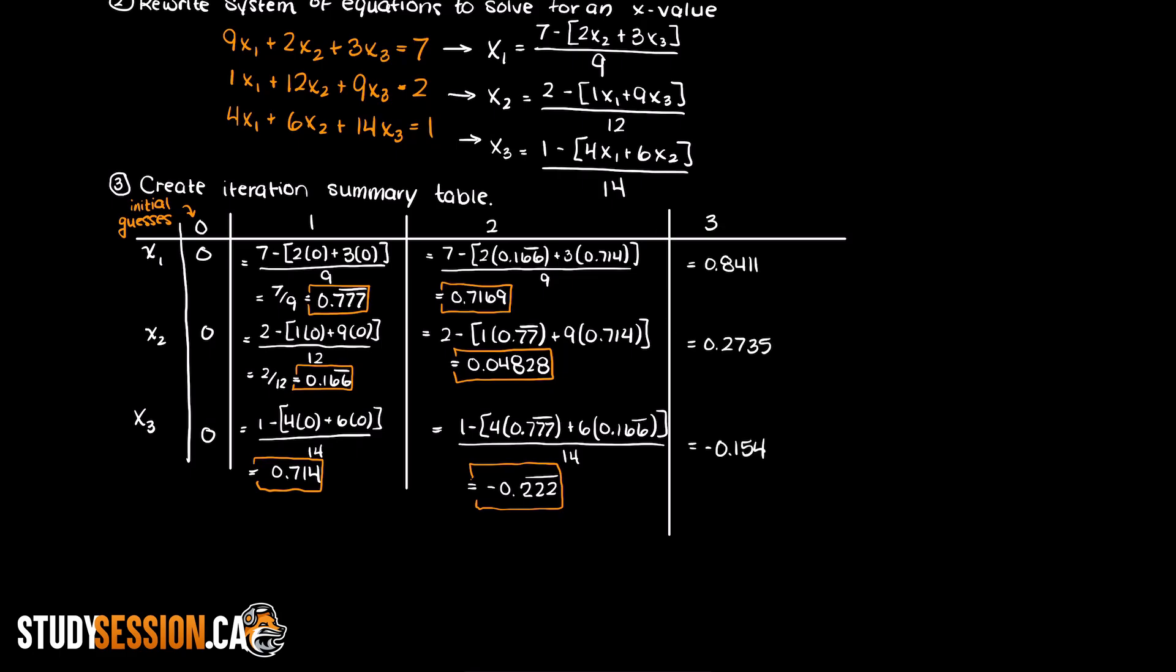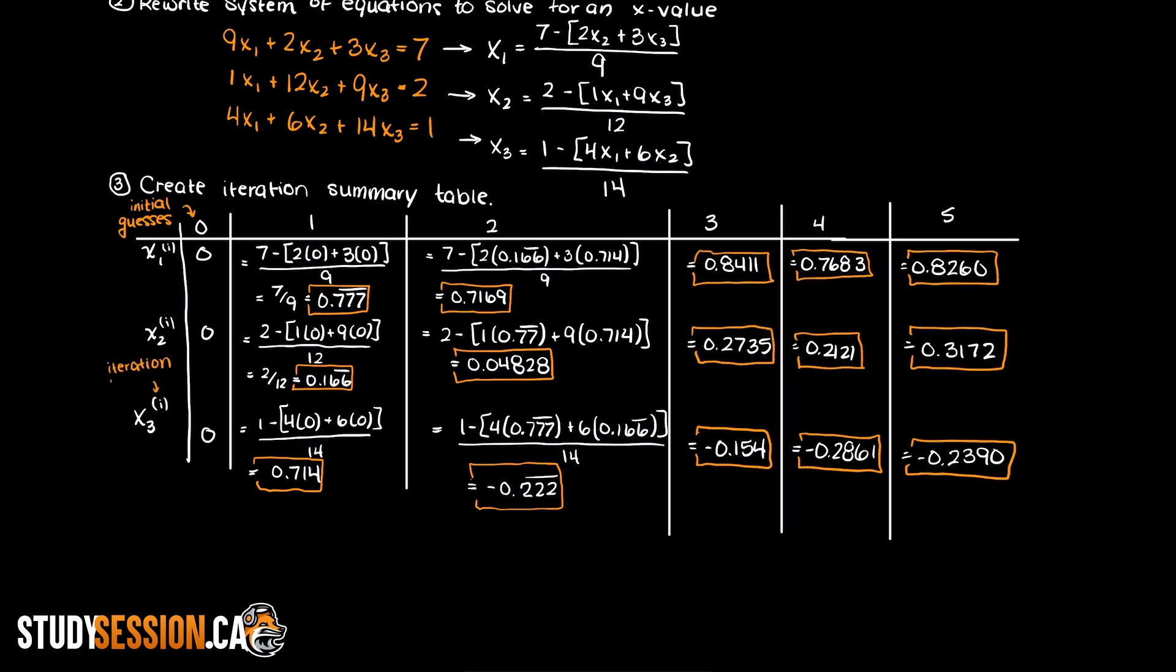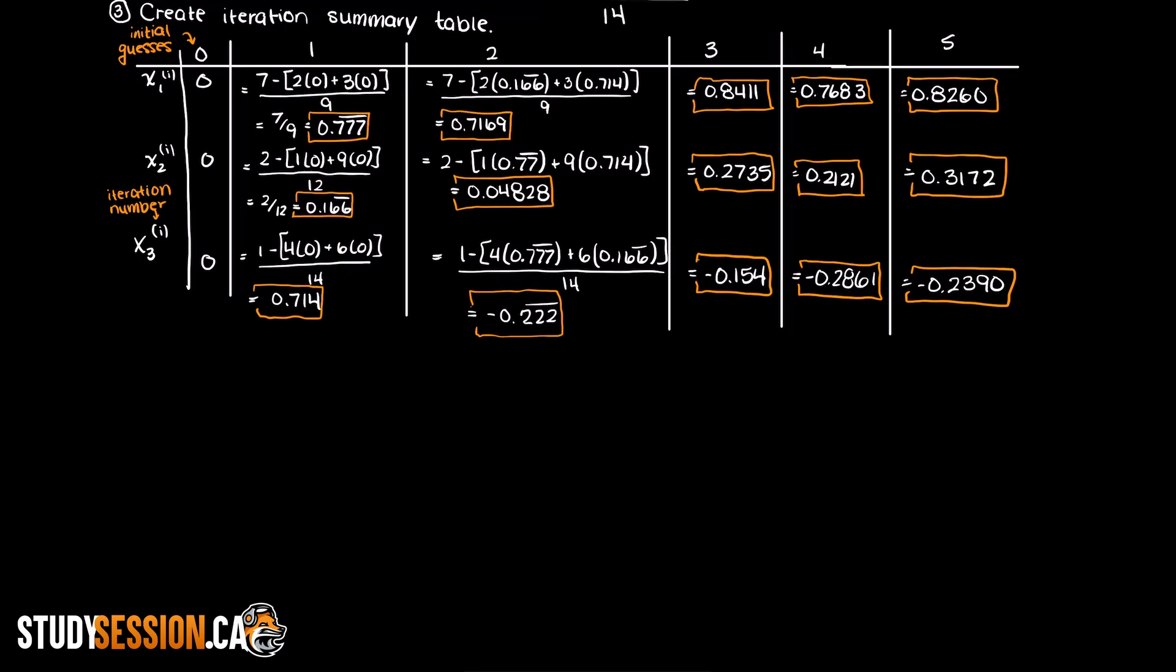Alright so after 5 iterations these are the x values that we arrive at. Although we could keep going at this point I hope you have an understanding of how Jacobi iteration works at this point.